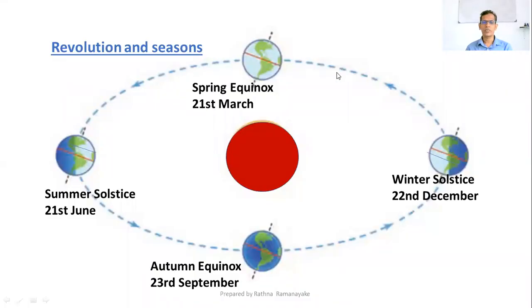What is revolution? The movement of the Earth around the Sun while rotating on its own axis can be known as revolution. The Earth takes 365 days and 6 hours for one complete revolution around the Sun.